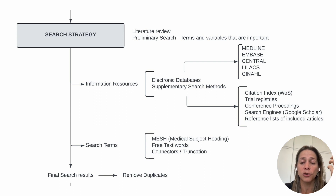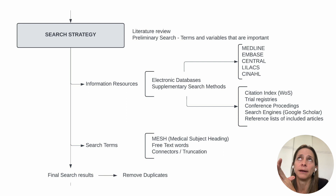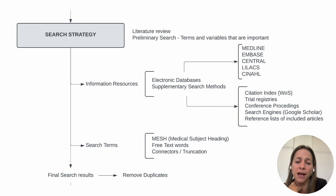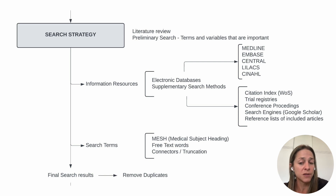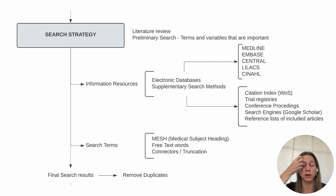The most common electronic databases are Medline from the United States, Embase from Europe, Central which is the Cochrane database, LILACS which is a Latin American database, and CINAHL which is a nursing and allied health database. The second main source is supplementary search methods — other databases that will help you find gray literature not fully published in journals. You will look at citation indexes like Web of Science, trial registries, conference proceedings, search engines like Google Scholar, and the reference lists of included studies.